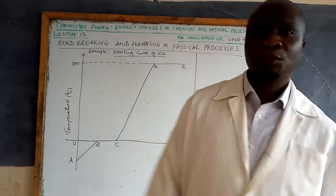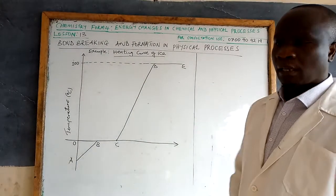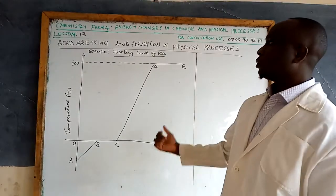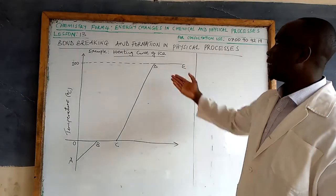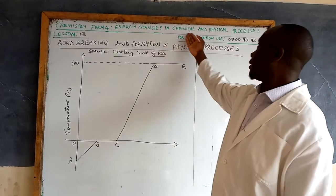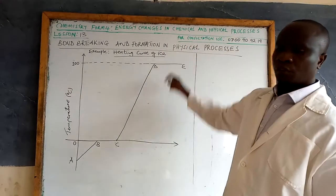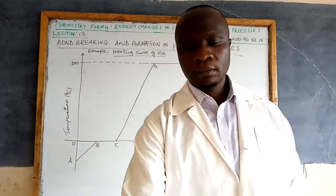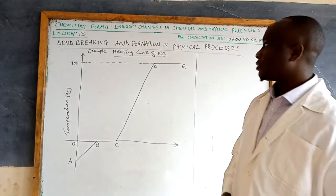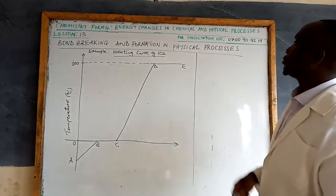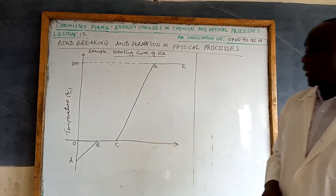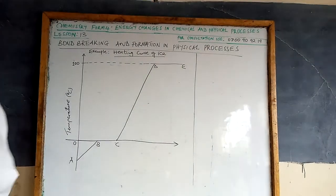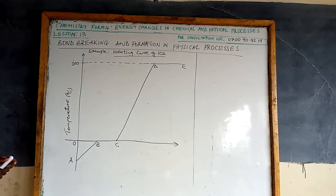Hello, welcome again Sejuma to lesson number 13. This is our second last lesson. We have been dealing with energy changes in chemical processes and physical processes. Today we discuss the energy changes in physical processes, and we are going to consider the example of the heating curve of ice, which will give us a good example of energy change in physical processes.